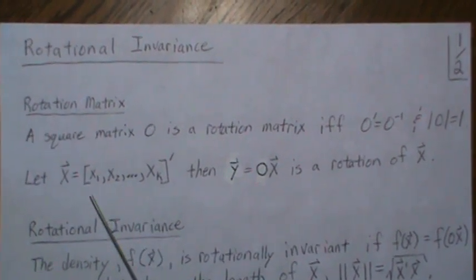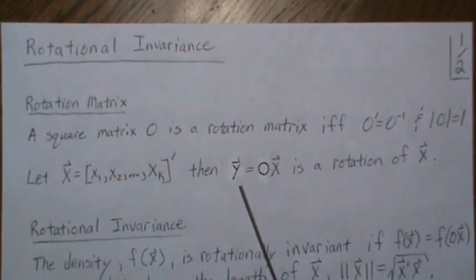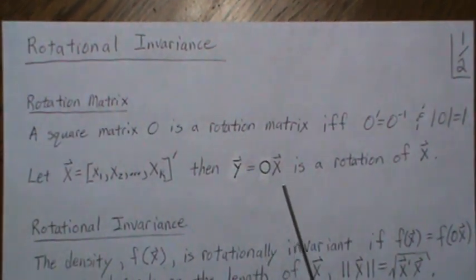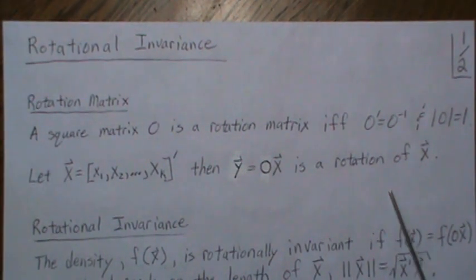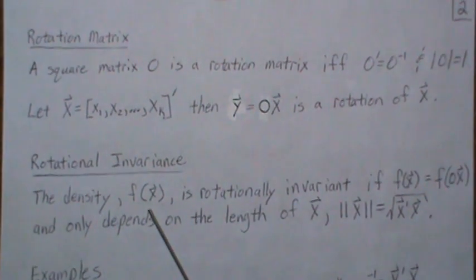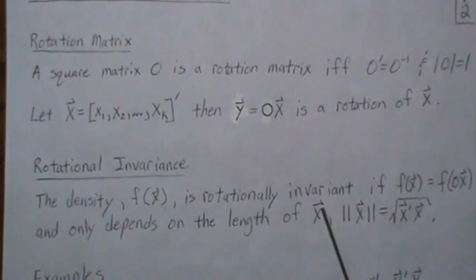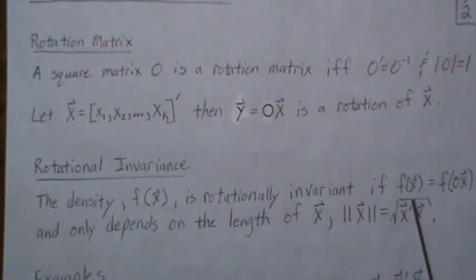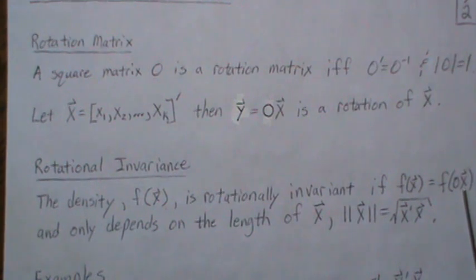Let's let X be a K by one vector, then Y is a rotation of X. So rotational invariance means the density f of X is rotationally invariant if the density of f of X is the same as the density of this rotation, and it only depends upon the length of the original vector X.